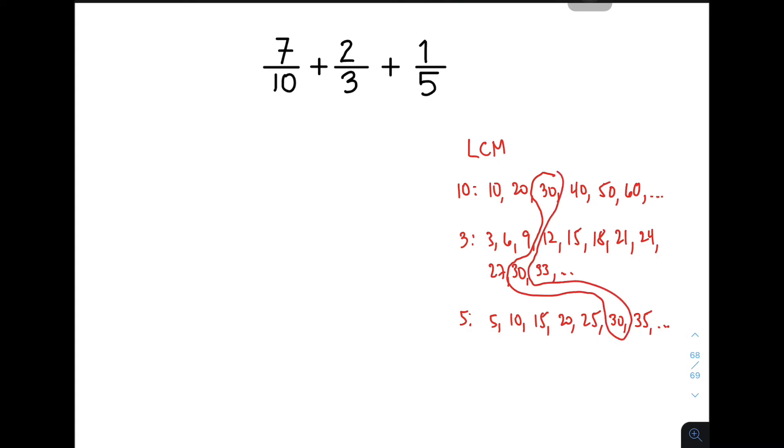We will be using 30 as the least common multiple. So 30 will serve as your least common denominator. This is your LCD, 30. So again, that is divide, multiply.